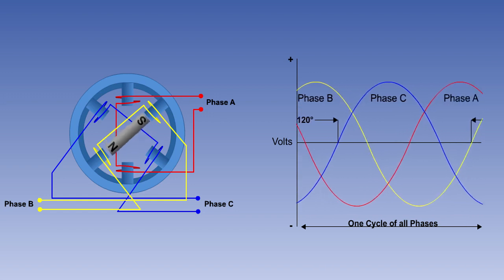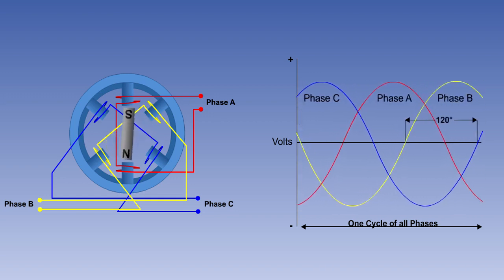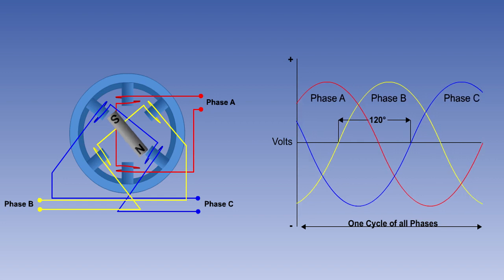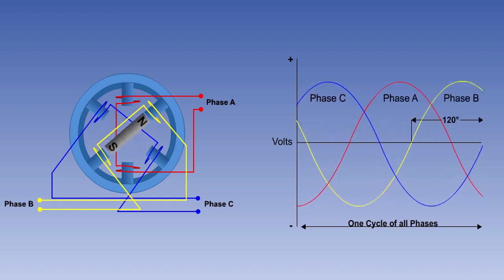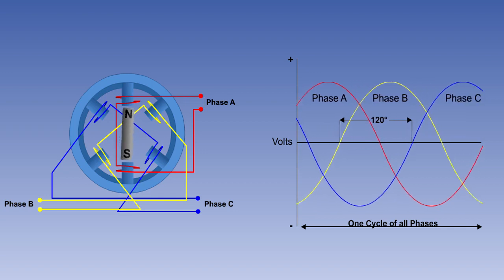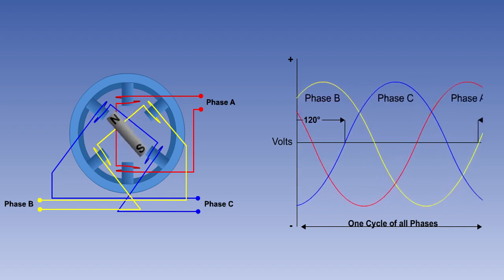The peak values of the voltages induced in the three single-phase windings of the three-phase alternator, are therefore 120 degrees displaced from each other. The three phases are independent of each other.